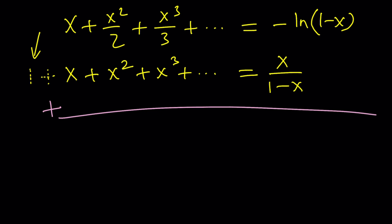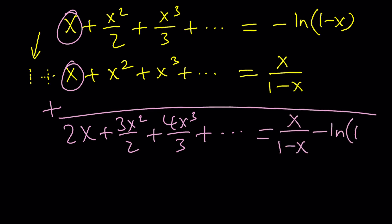So now we're going to go ahead and add these two things. Now take a look. This is where mathematics happens or just mathematics. x plus x is 2x. This is 3x squared over 2. This is 4x cubed over 3. Dot, dot, dot.